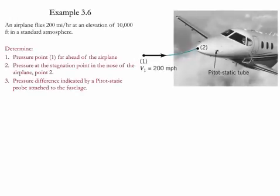Example 3.6. In this example we have an airplane which flies at 200 miles per hour at an elevation of 10,000 feet in a standard atmosphere.